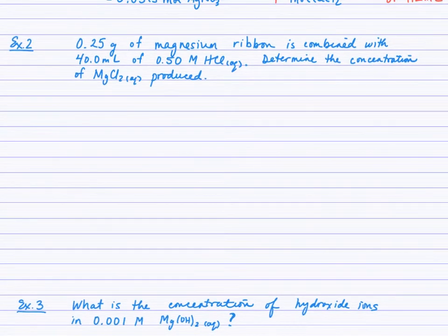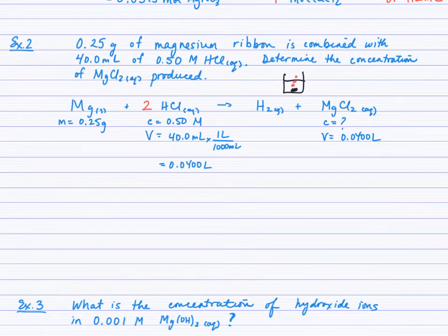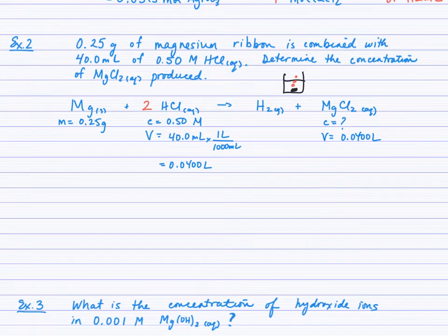Second question: 0.25 grams of magnesium ribbon is combined with 40 mL of 0.50 mol/L hydrochloric acid. Determine the concentration of the magnesium chloride solution produced. Begin with the balanced equation and list the given and required information. You realize you've been given mass of the first reagent and concentration and volume of the second. We're asked for the concentration of the product — therefore we're in a limiting reactant situation, because it's either the mass of magnesium or the moles of HCl that determines the magnesium chloride concentration.